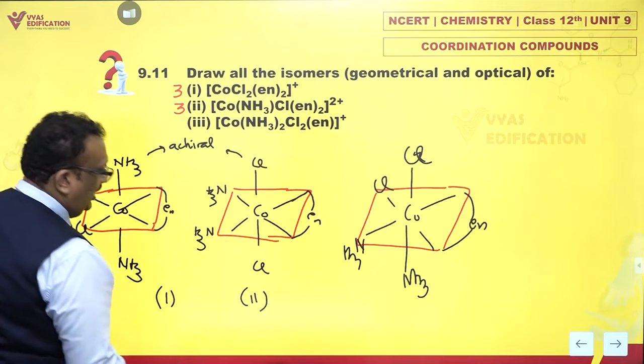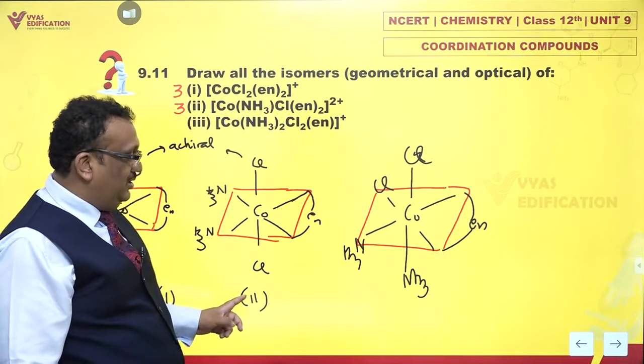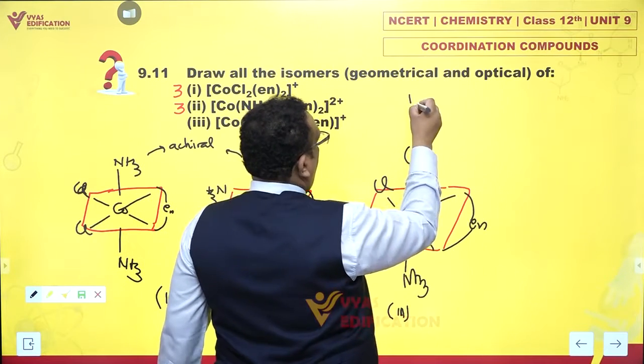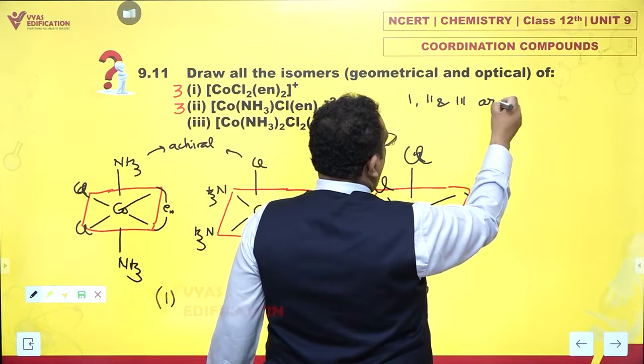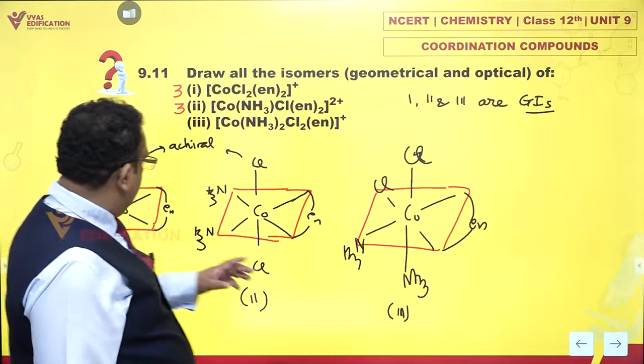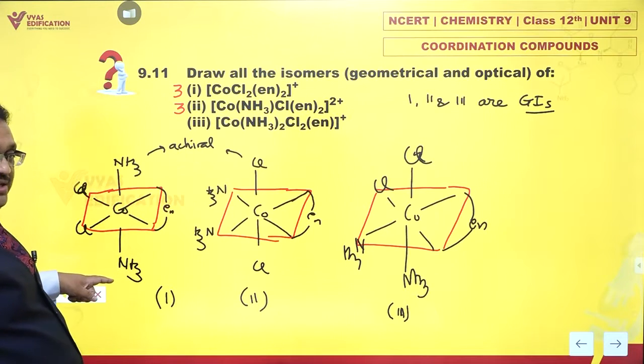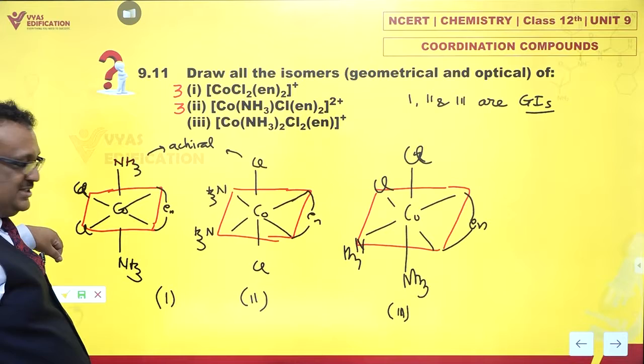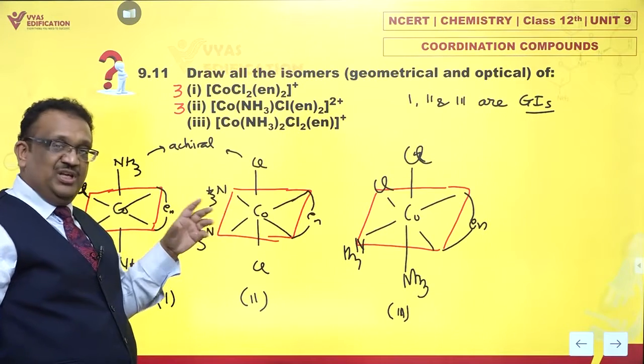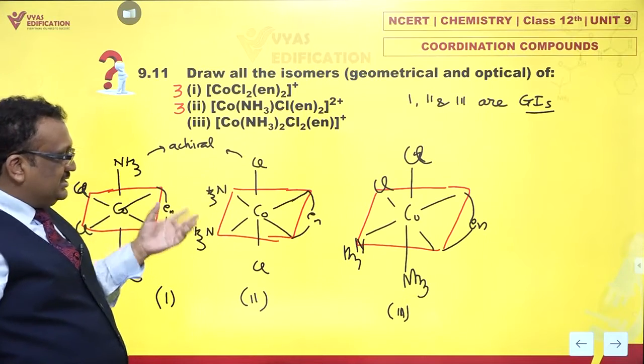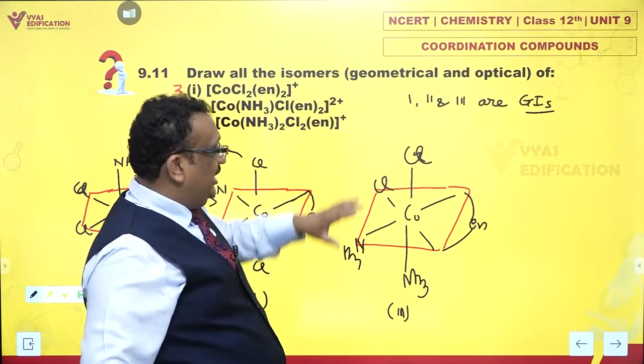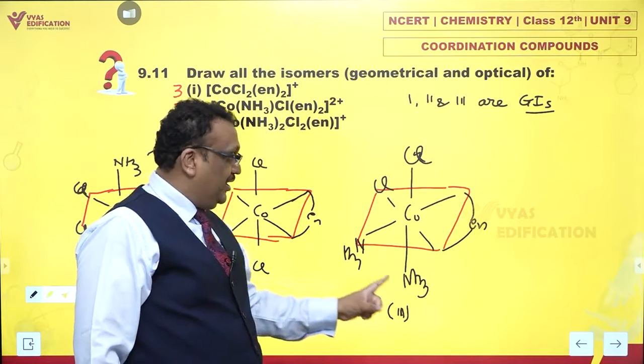One and two are geometrical isomers of each other. What about three? One, two, and three are geometrical isomers. Yes, because in this one pair, ammonia is trans, the second pair, Cls are cis. In this, the opposite: one pair is trans, that is cis. But in this case, chlorides are trans and ammonia is cis. In the third case, both monodentate pairs, Cl-Cl is cis and ammonia-ammonia is also cis.